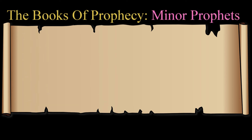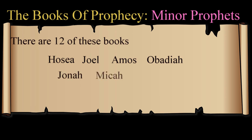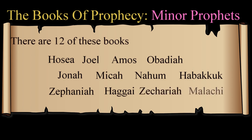The minor prophets: there are 12 of these books — Hosea, Joel, Amos, Obadiah, Jonah, Micah, Nahum, Habakkuk, Zephaniah, Haggai, Zechariah, and Malachi.